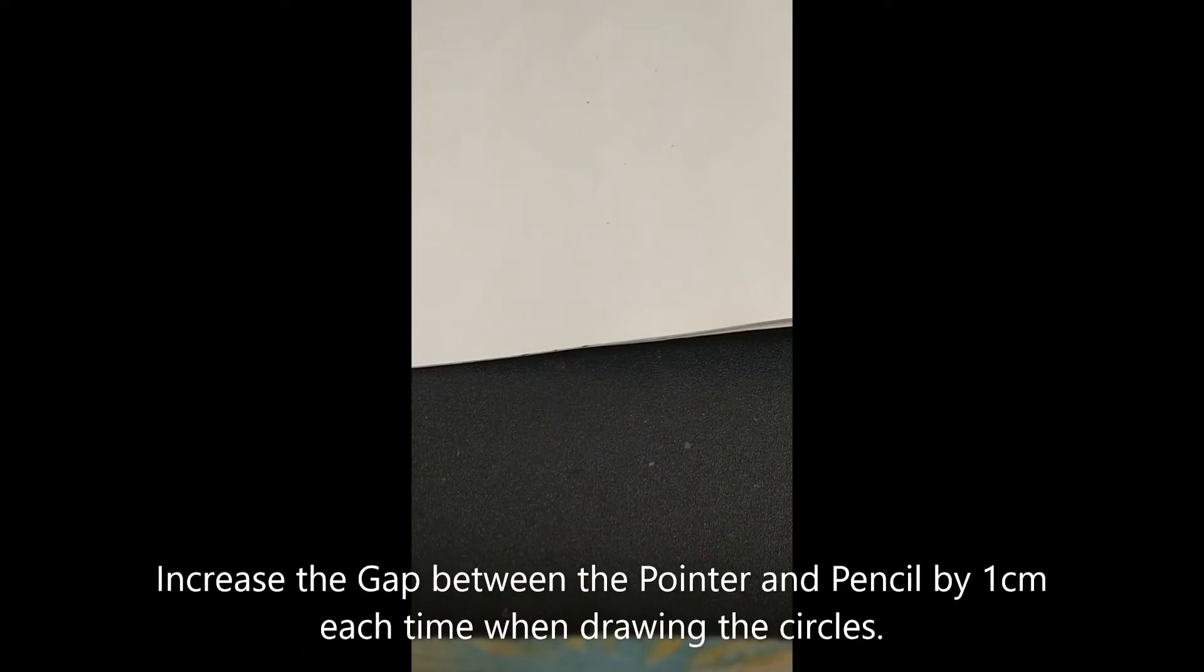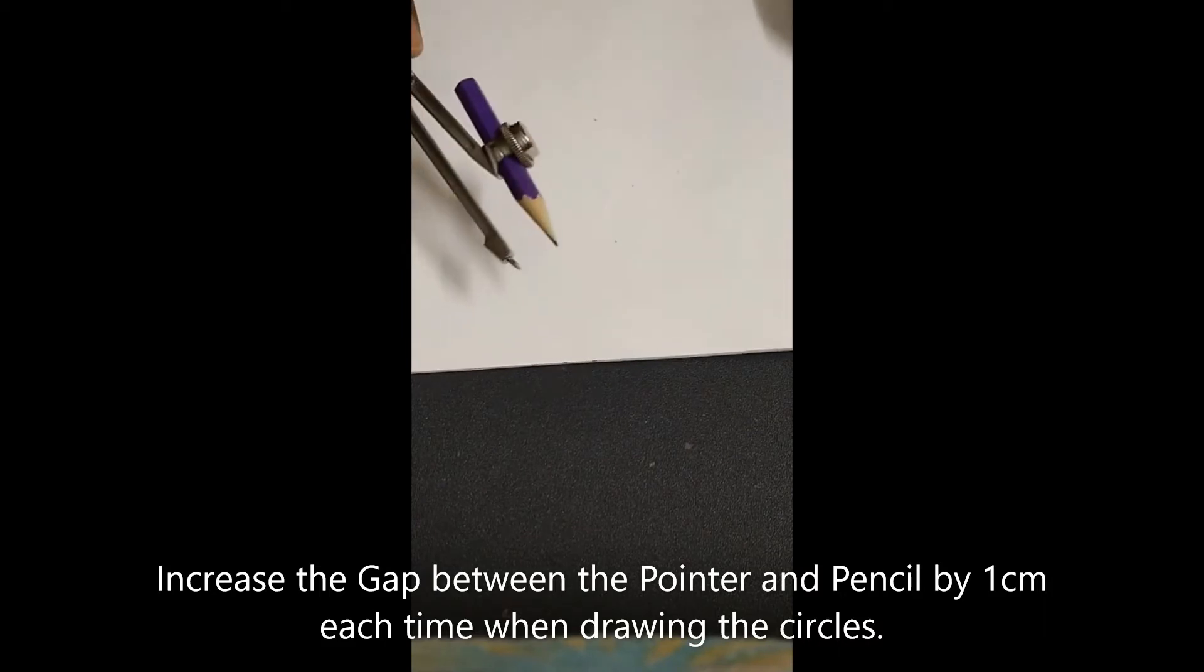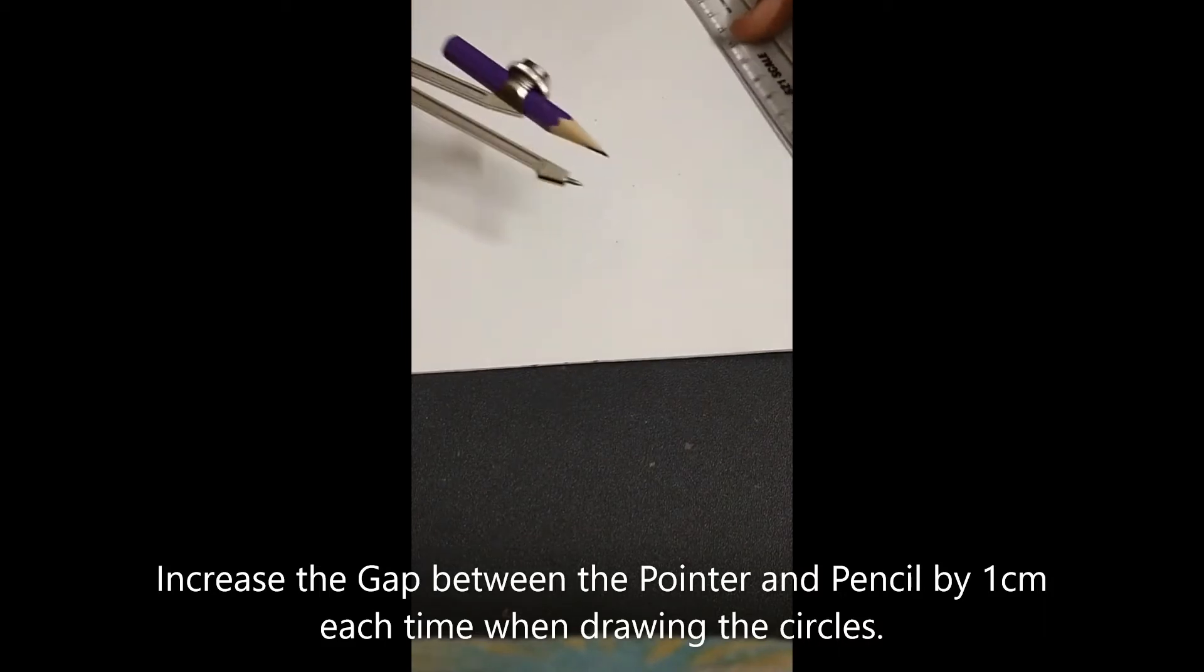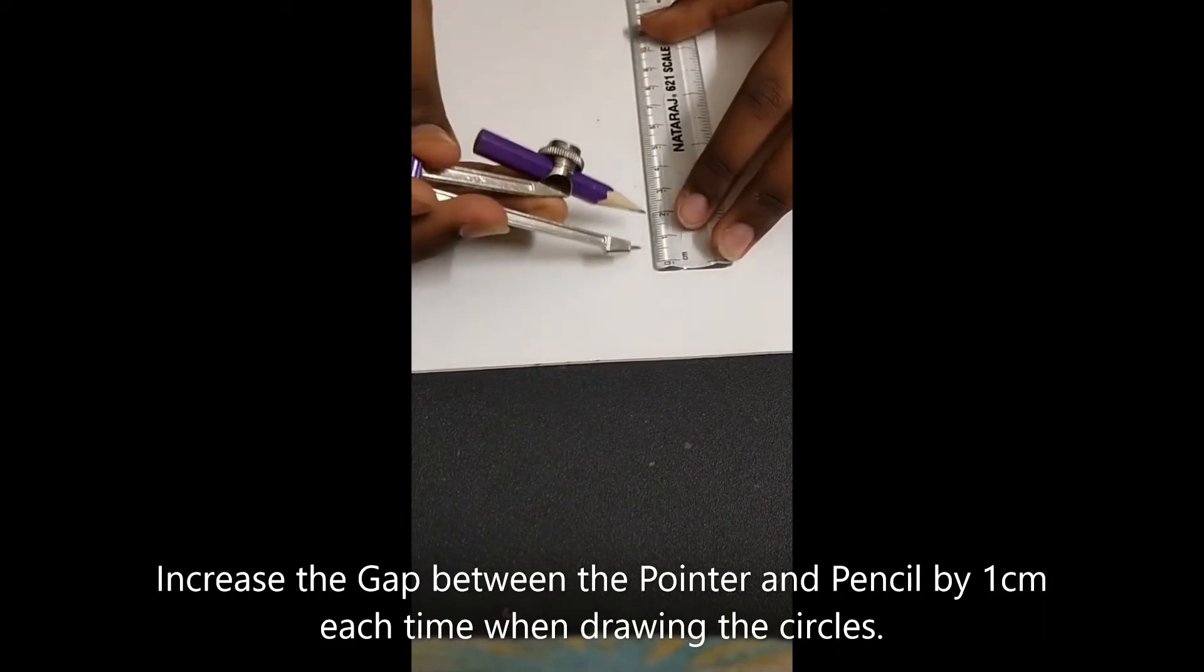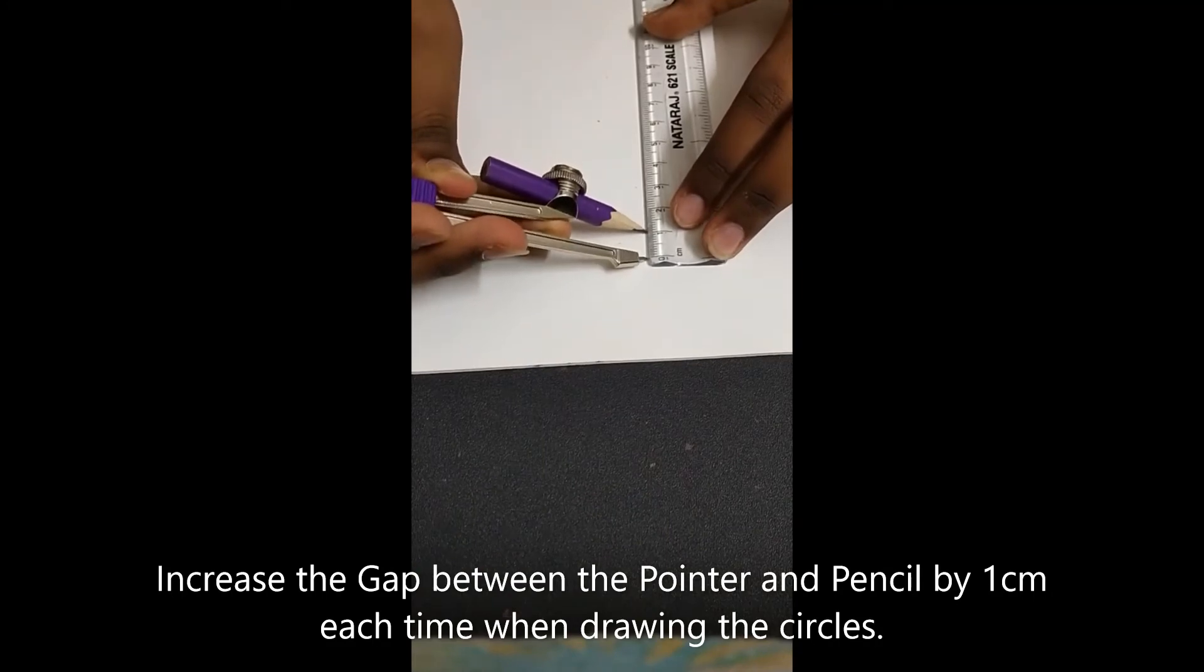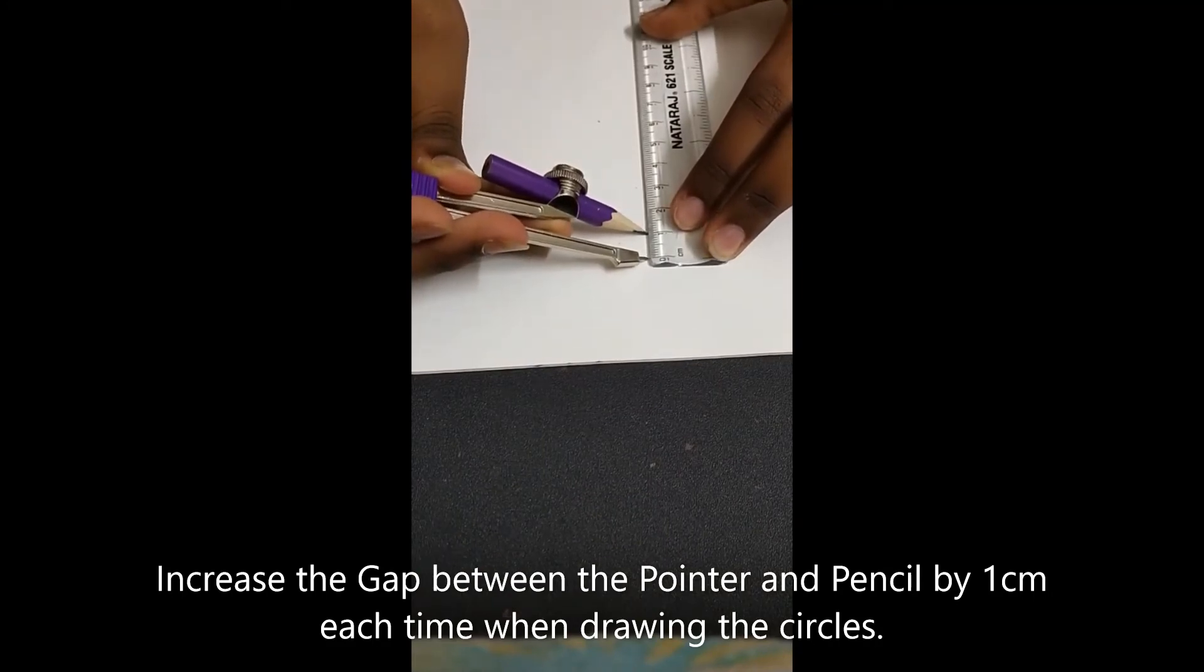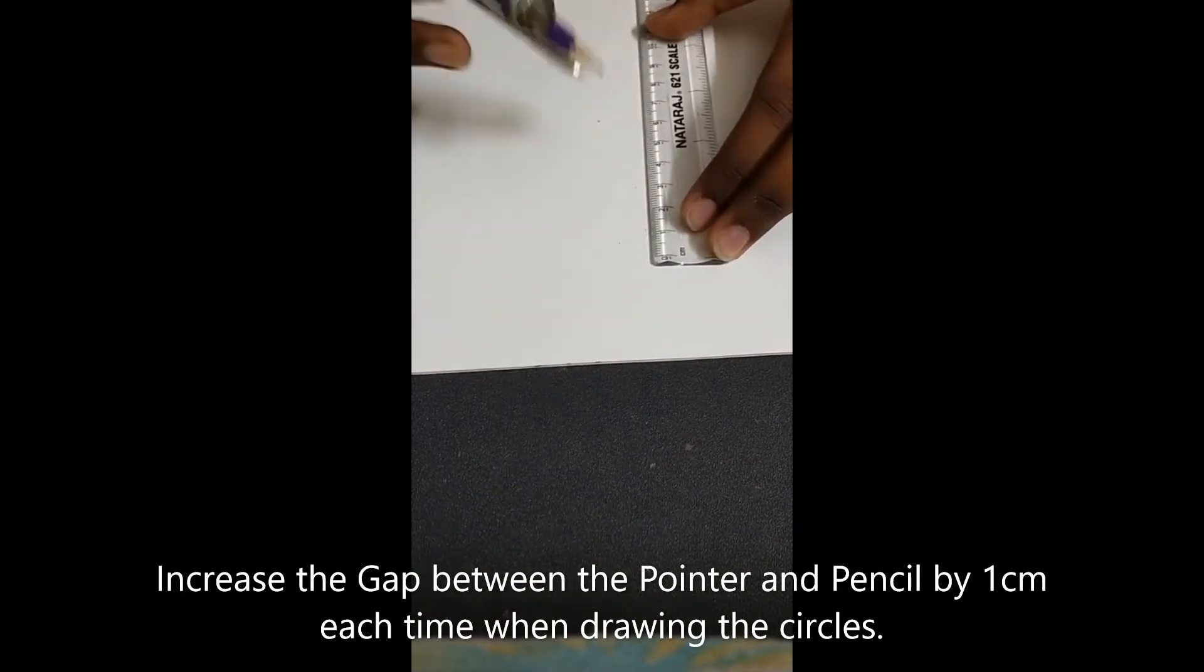The first step is to create circles. You can create as many circles as you wish. You just need to increase the gap between the pencil and the needle by 1 cm each time. For example, I want to create 8 circles, so I need to increase the circles by 1 cm gap each time. Let's start with 1 cm.